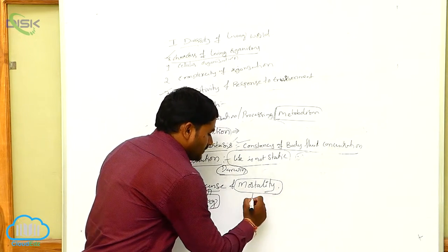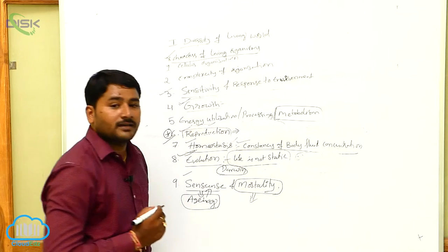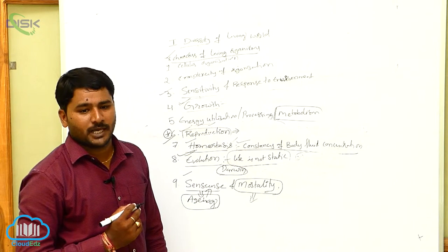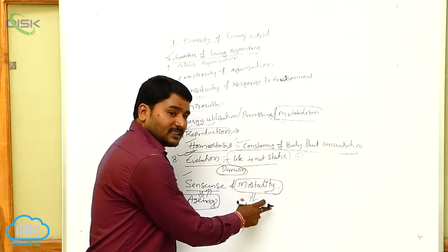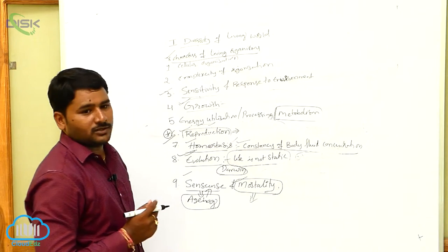Mortality means the individuals definitely die after their life span. So the process of dying or the death of the individual is called mortality.